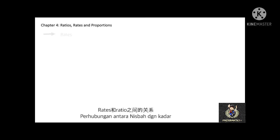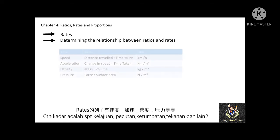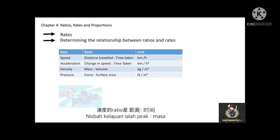The second part of this chapter is about rate. A rate is a comparison between two quantities of different units of measurement. For example, in our daily life, rates are often used to compare quantities such as speed, acceleration, density, pressure, and many more. The formula for speed is distance traveled over time taken, and the unit of measurement can be kilometers per hour or meters per second.